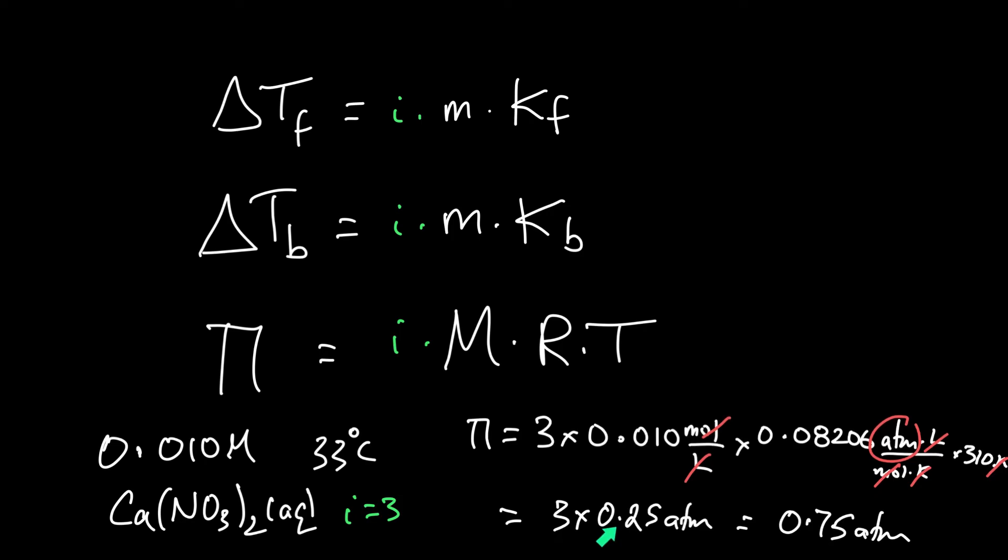So without the Van't Hoff factor, right, if this was just like glucose or fructose or formaldehyde where it doesn't break down, this Van't Hoff factor would be one because molecules don't break down in solution and you would get an osmotic pressure of a quarter atmosphere. But because it's ionic and because it breaks down into three things, then you get triple the pressure. So a triple whammy and the osmotic pressure is 0.75 atmospheres, which is to say one of two things.